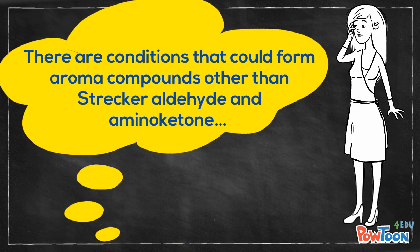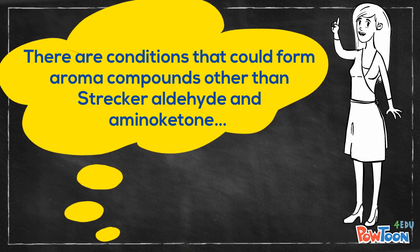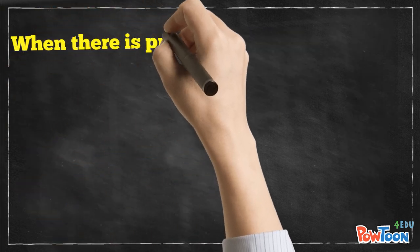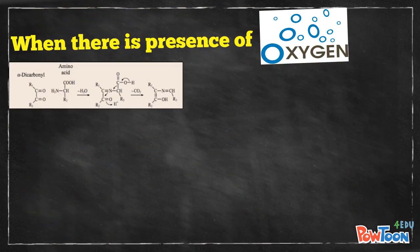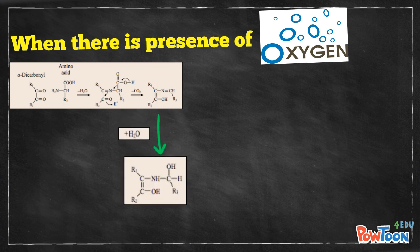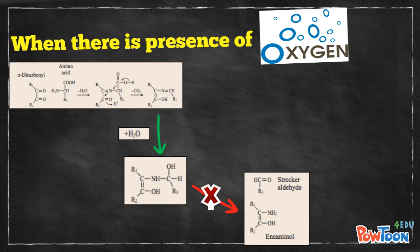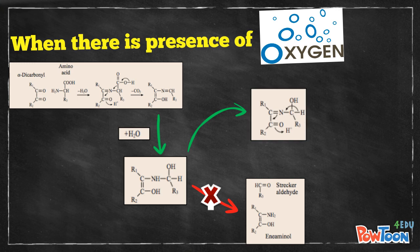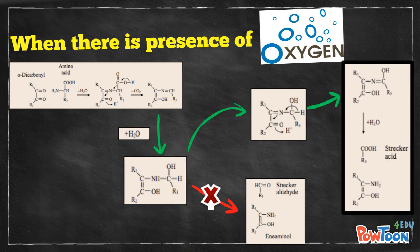There are some conditions that could form compounds other than Strecker aldehydes and aminoketones. When there is presence of oxygen, the intermediate products formed during the hydration and decarboxylation steps are not able to form Strecker aldehyde and aminoketones. Instead, the intermediate product will undergo oxidation to form alpha-dicarbonyl, followed by intramolecular redox reaction and hydrolysis to produce Strecker acid and aminoketones.